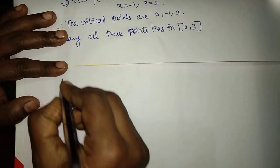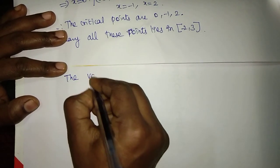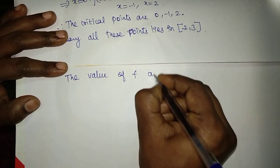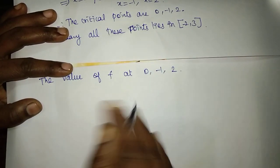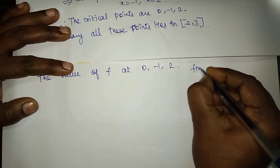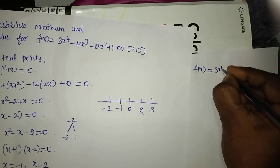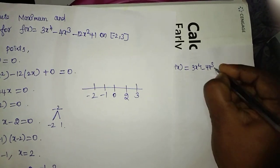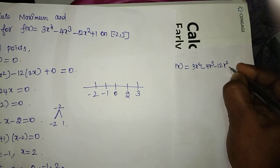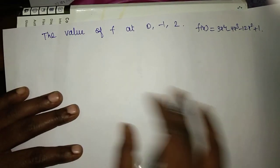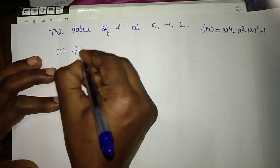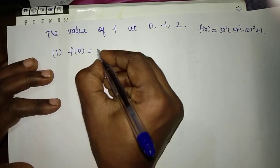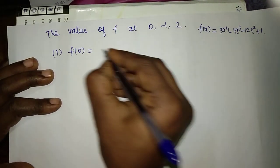Now we find the value of F at the critical points: 0, minus 1, and plus 2. We substitute into F of X equals 3x to the power 4 minus 4x cubed minus 12x squared plus 1. First, F of 0: substituting x equals 0, all terms vanish except the constant, so F of 0 equals 1.